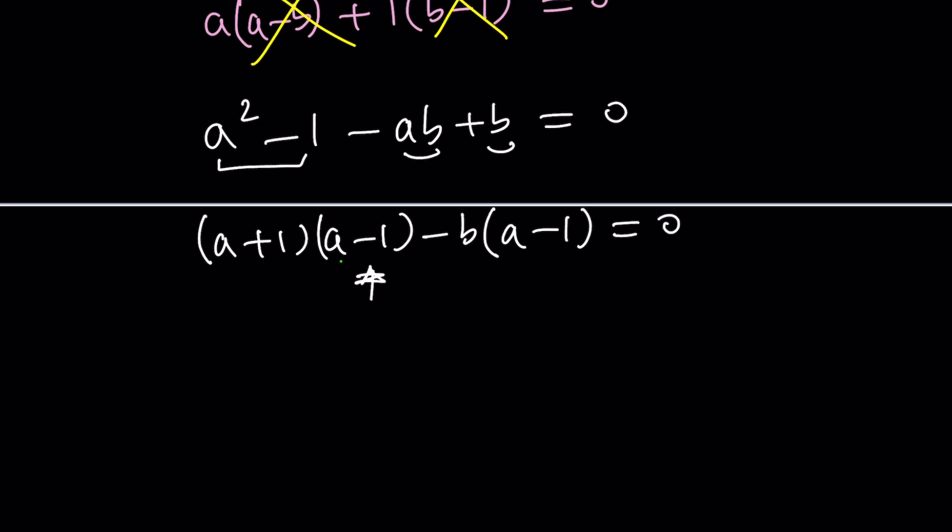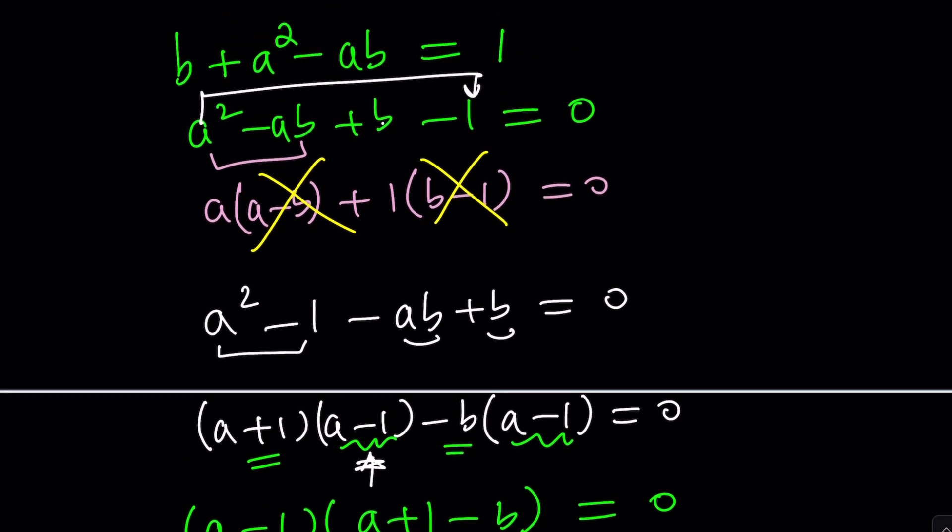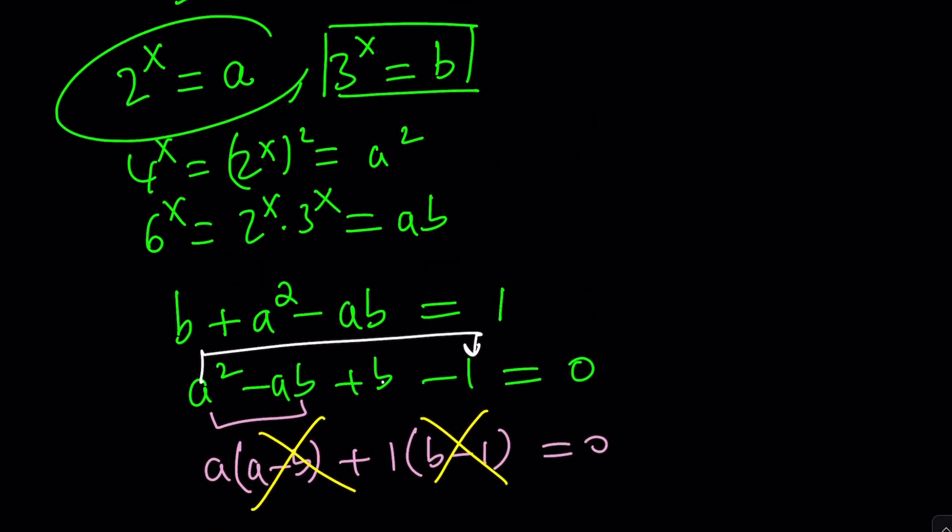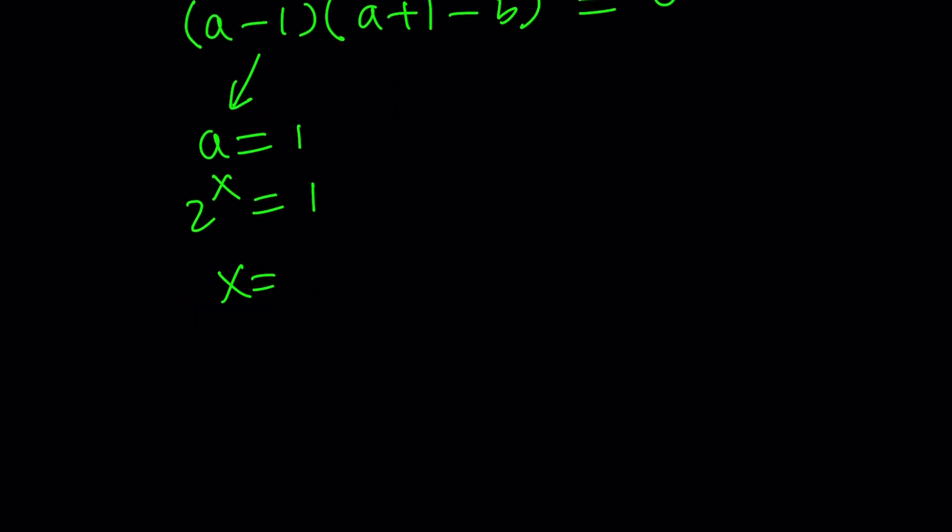Now, a - 1 is a common factor. Awesome. We can factor that out, and the other factor is going to be formed by these two, a + 1 - b, and the whole thing is equal to 0. Beautiful. Now, we have two factors that are much easier to solve for. First of all, from here we get a = 1, but you've got to remember a is 2^x. So we're going to replace a with 2^x = 1, and this is going to give us x = 0.